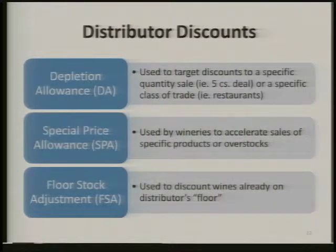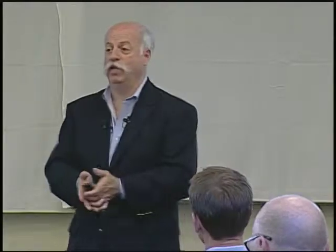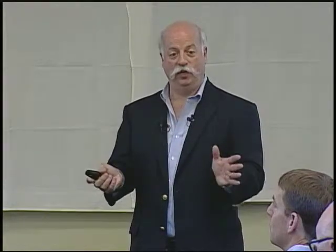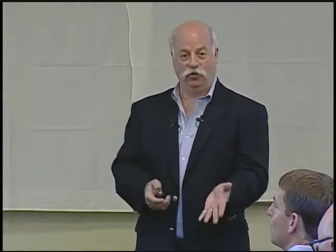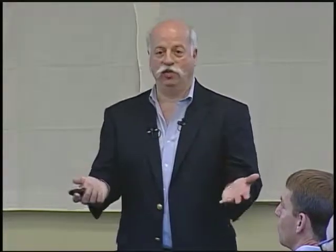As a winery, you'd ask for an accounting at the end of each month. For all five-case deals, you give the distributor a credit of $5 — or whatever the number was, maybe $8 — for all those cases. That way, cases sold one, two, three, or four at a time get your full FOB, but on five-case deals you effectively get a lesser FOB without changing the FOB on all bills going out of the winery.